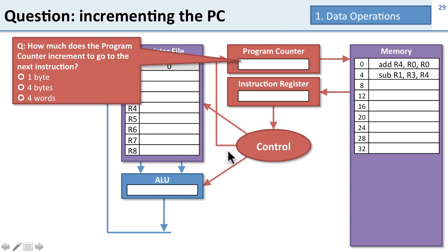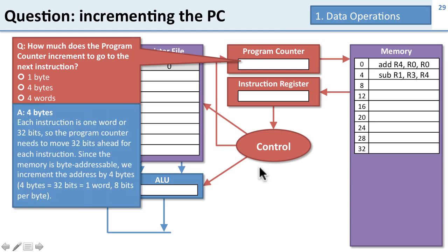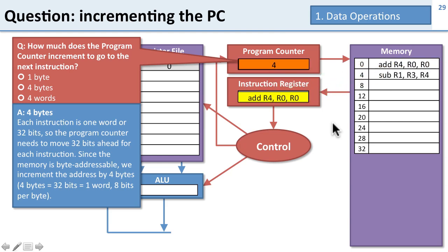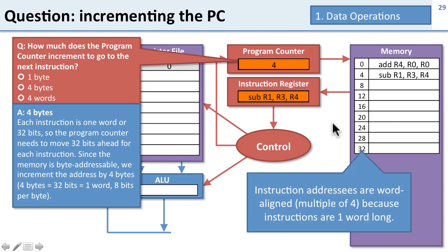Here's a question: how much does the program counter increment to go on to the next instruction? The program counter increments by 4 bytes, because each instruction is 32 bits or 1 word. So when we go from one instruction to the next, we increment by 4 bytes. We start at program address 0, load and execute that instruction, then advance to address 4 to get the next 4 bytes. Instructions are each one word or 4 bytes, which is why the addresses are written as word-aligned memory addresses.